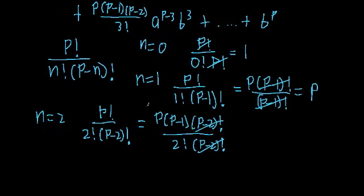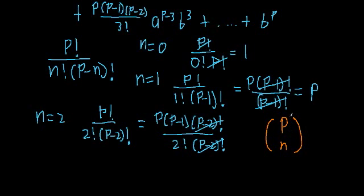One quick thing: you can rewrite this fraction in shorthand notation. You can typically see it written as parentheses with p on top and n on the bottom — no bar, nothing there. This is just shorthand representing that fraction, and the way we typically say it is 'p choose n'.